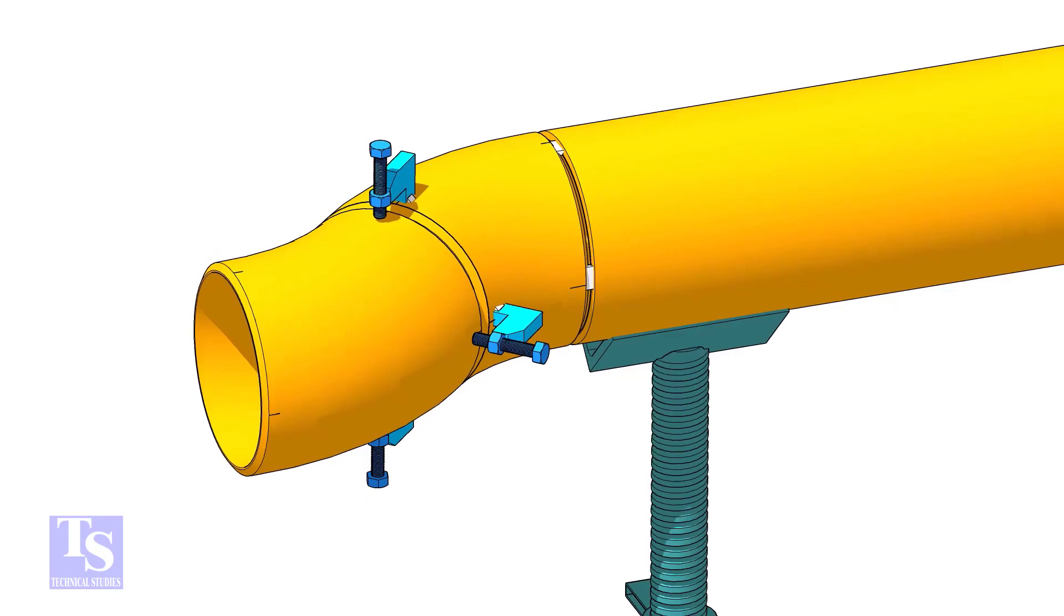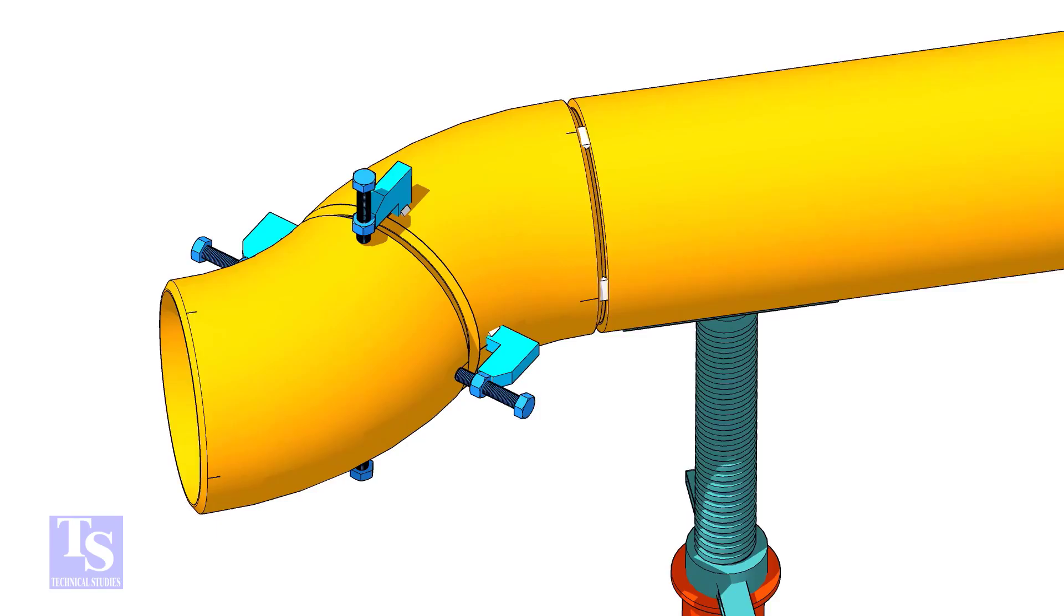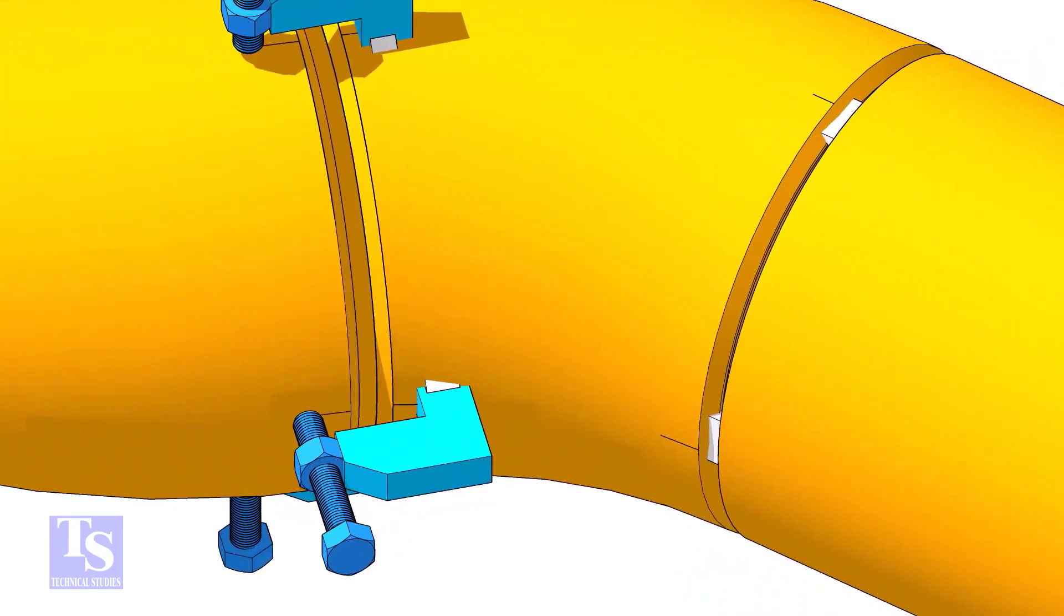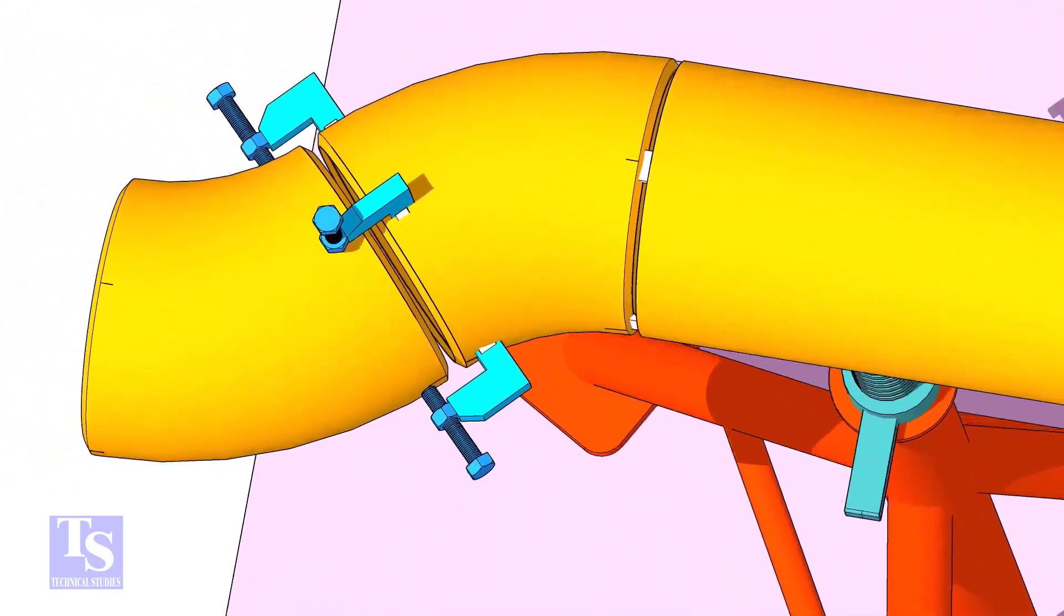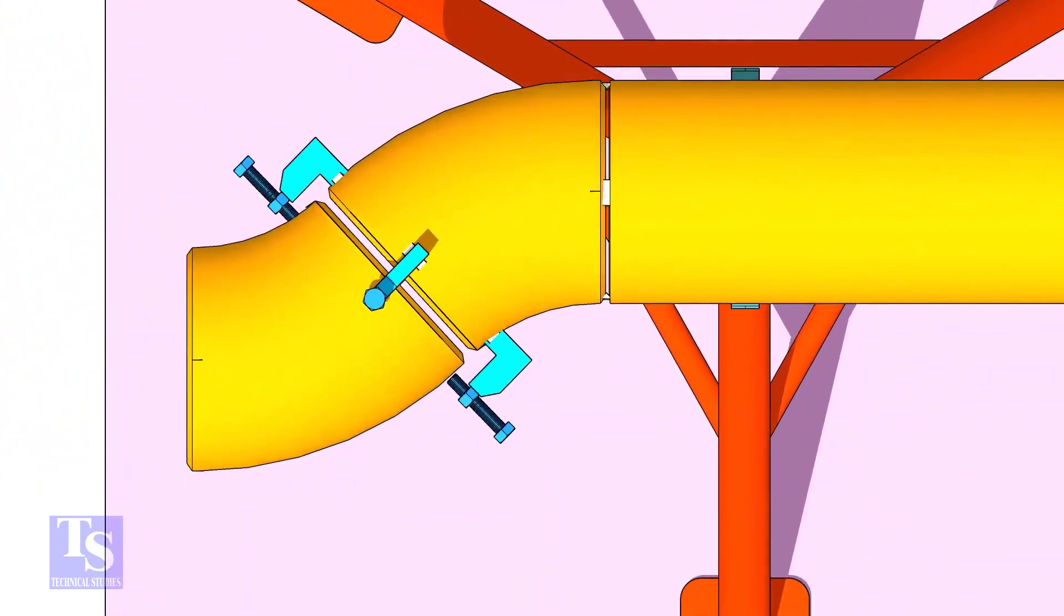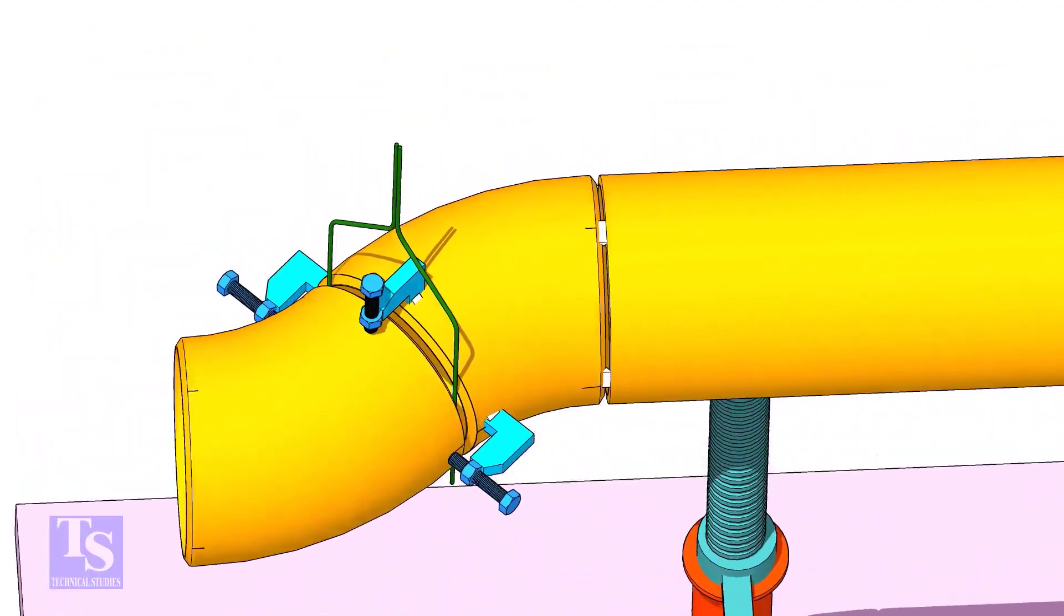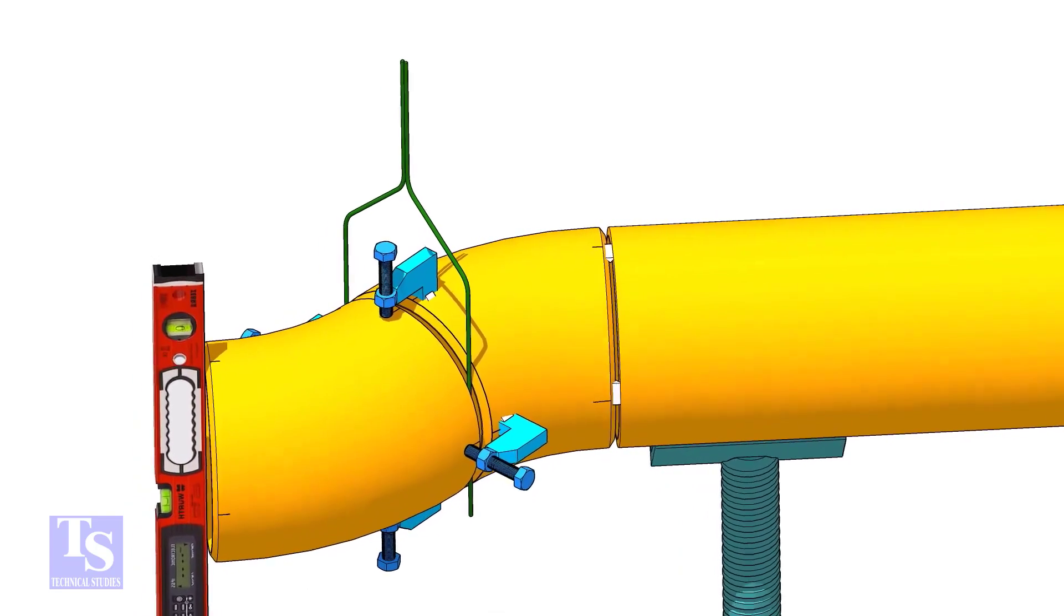Put the other elbow in the jack bolts and match the center lines of both elbows. Put the gap rod between the elbows and maintain the required gap. Check if the face is level.